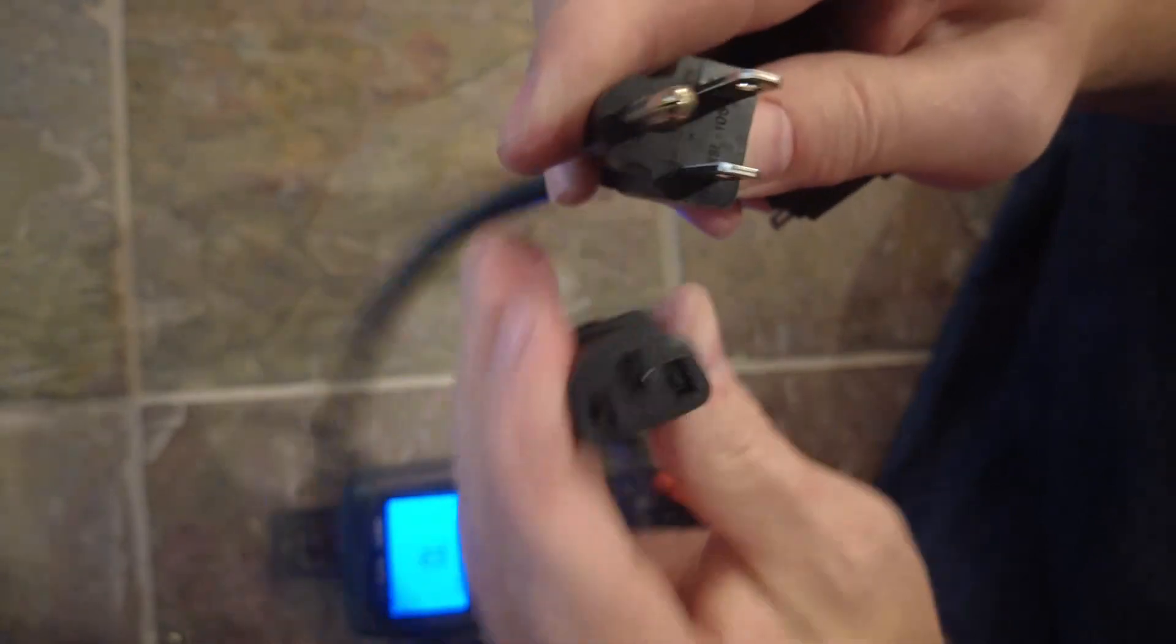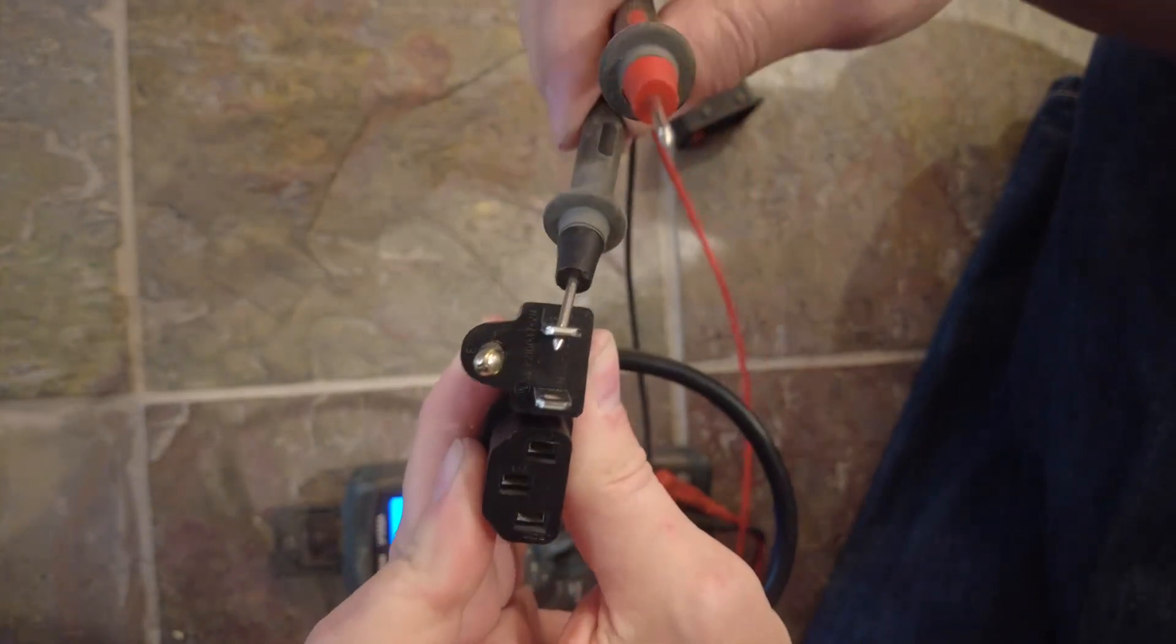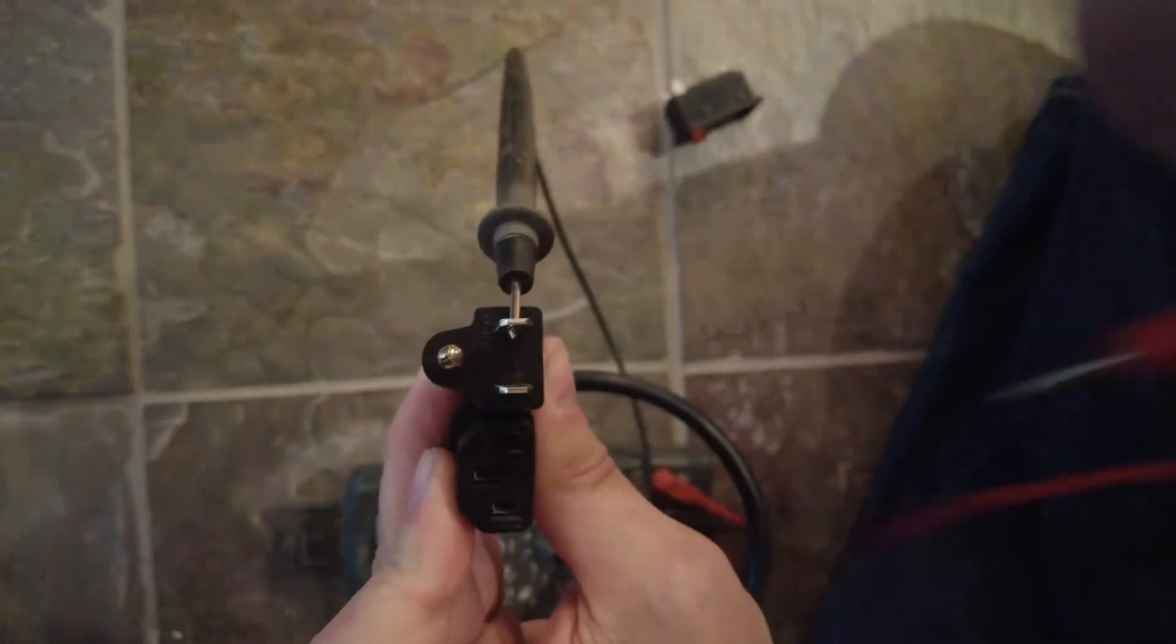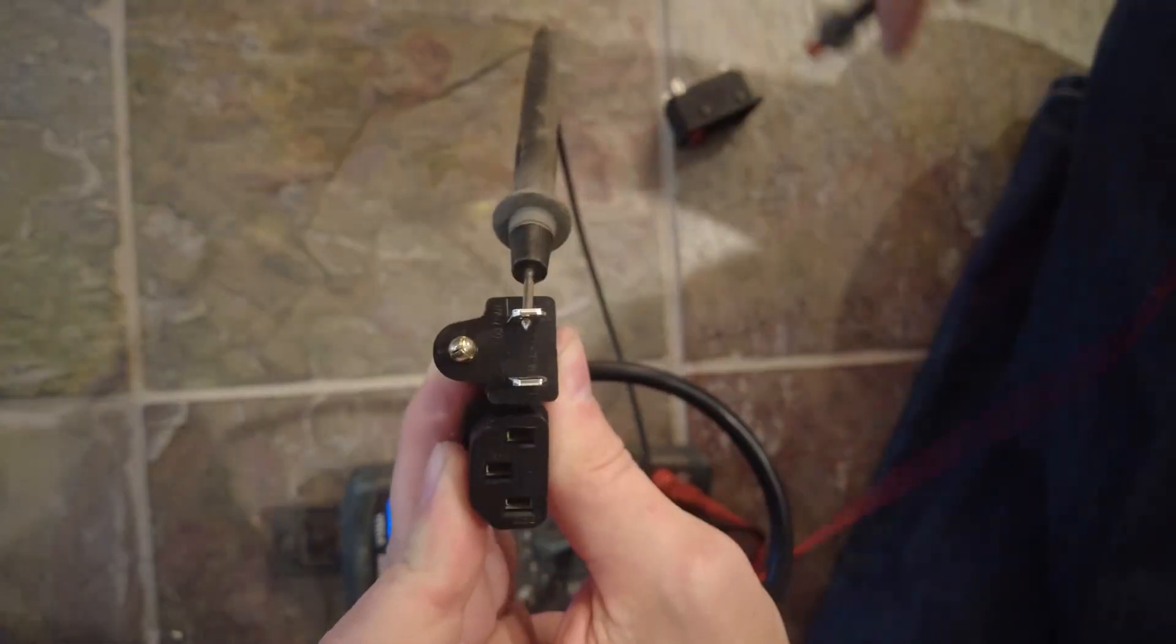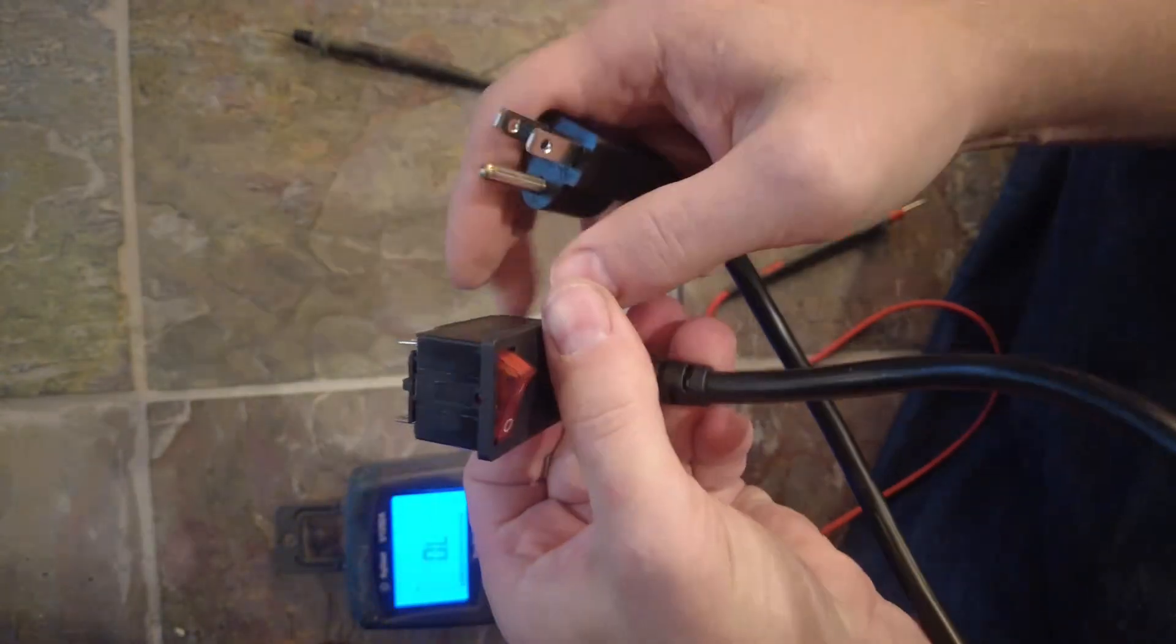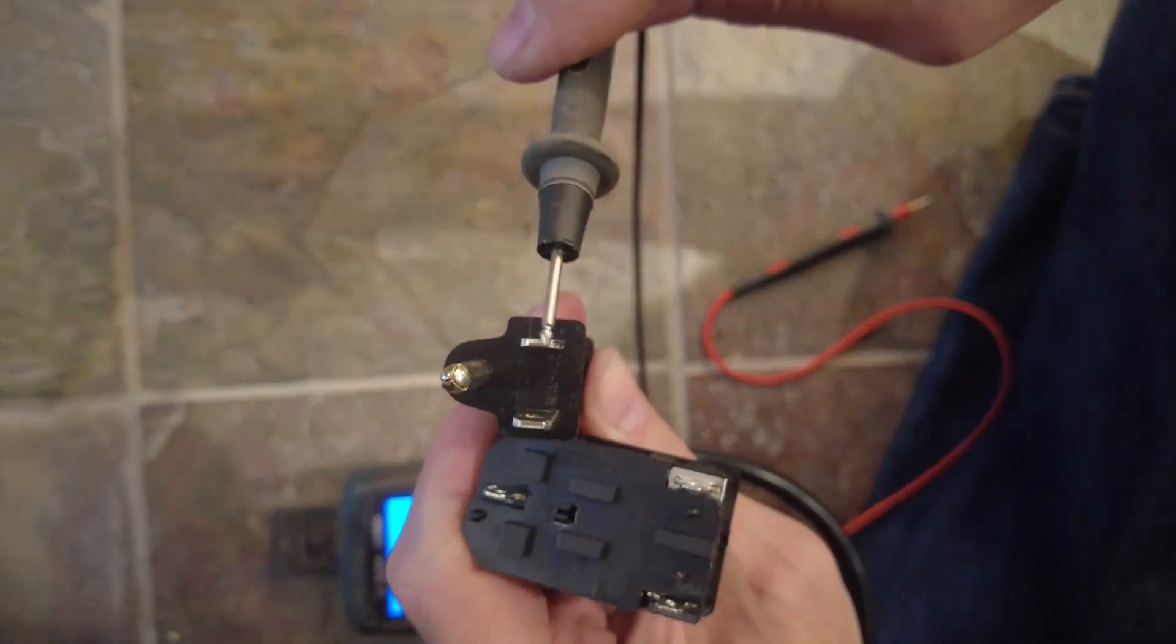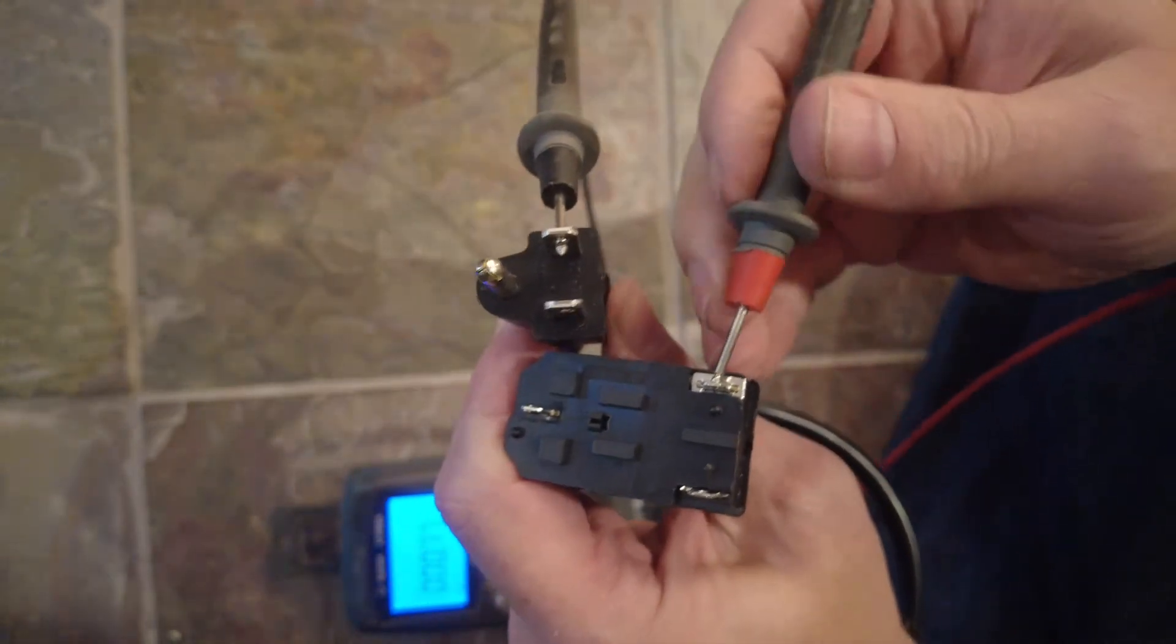We can prove that by doing a little continuity test. This should be the line, the 120 volts. We've got nothing here. And we got it here. The line. Nothing here. Nothing here. Now if I plug this in here, turn this on, we'll put this on the line side again, and we'll find it. Okay, there it is.